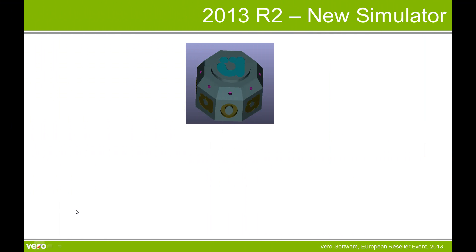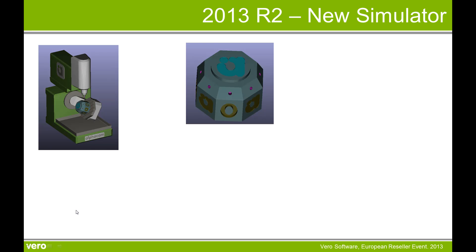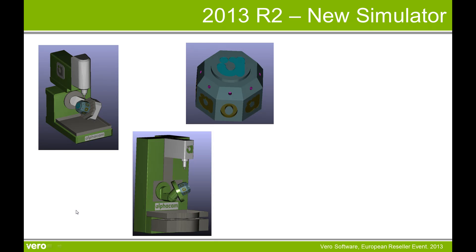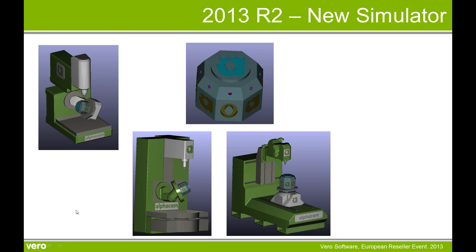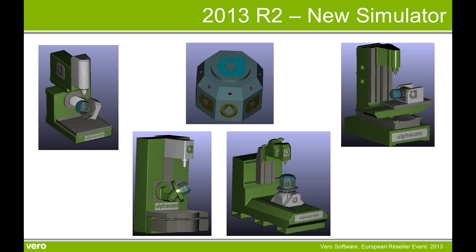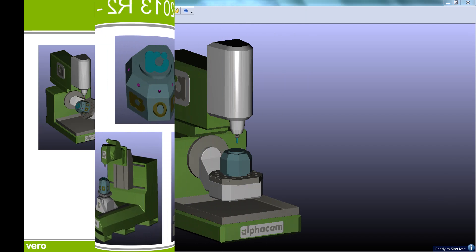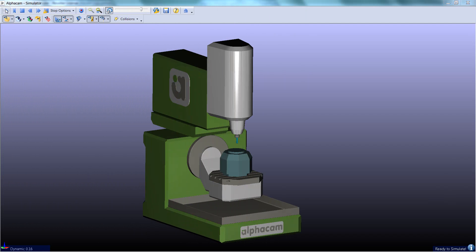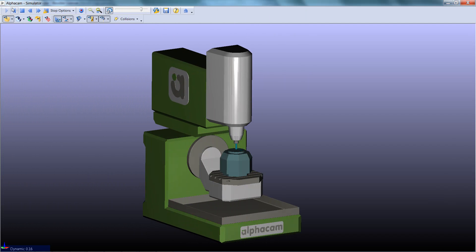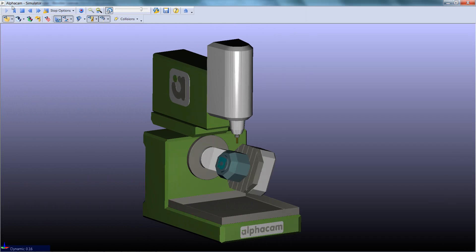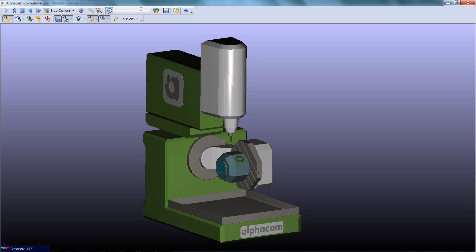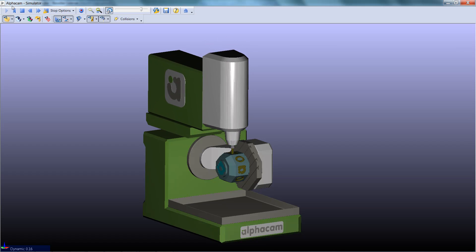The new simulator supports many new machine configurations, and we are going to show simulating a simple part on these different machine configurations. On this machine, the tool is moving in X, Y and Z with the part rotating around Y and Z.